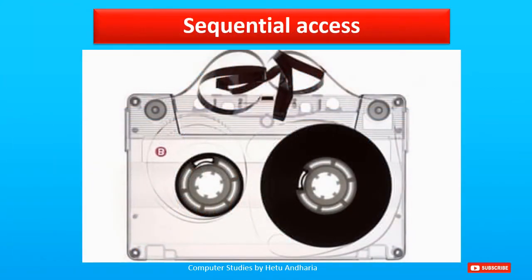In sequential access, data is stored serially or sequentially in a long string, just like an audio tape. If you want to hear the third song, the first two songs must be fast forwarded. In olden days, audio cassettes were used to play songs. The magnetic tape inside has all songs written on it sequentially. When you want to access some part, you have to pass through the previous part. All the data was stored in a sequence.